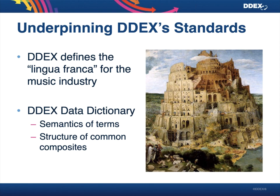In some ways, some people describe DDEX as a language, and that is very much down to our data dictionary. The reason they call it a language is that company A translates their data model into DDEX, sends a message to company B, and company B translates the message back into their data model. That enables them to talk to each other and know exactly what information is being communicated. So the data dictionary is really our tower of Babel — very much the foundation of all the work that we do at DDEX.